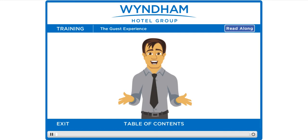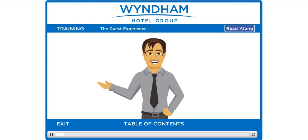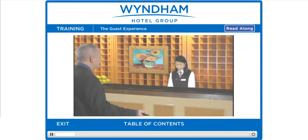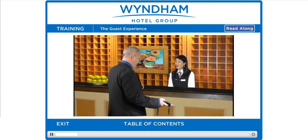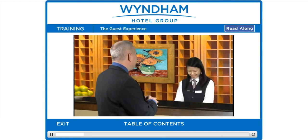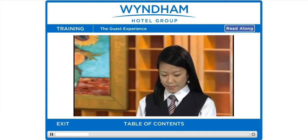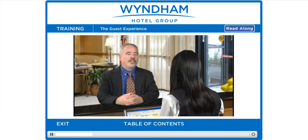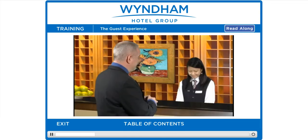The final step in a quality guest experience is checkout. Checkout is an opportunity to leave a lasting positive impression and a final chance to learn of any problems or complaints. 'Good morning, Mr. Carlton. How may I help you?' 'I'd like to check out.' 'I can help you with that.' Confirm the guest's room number to close out the account: 'Room 314, is that correct?' Also confirm payment arrangements and the guest's email address.